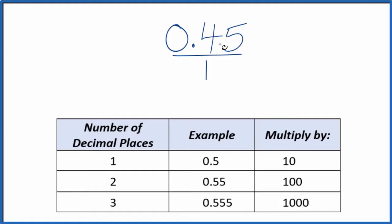What we need to do is get this 0.45 to a whole number, and I can see that we have one, two decimal places. So when we have two decimal places, we're going to multiply it by 100.